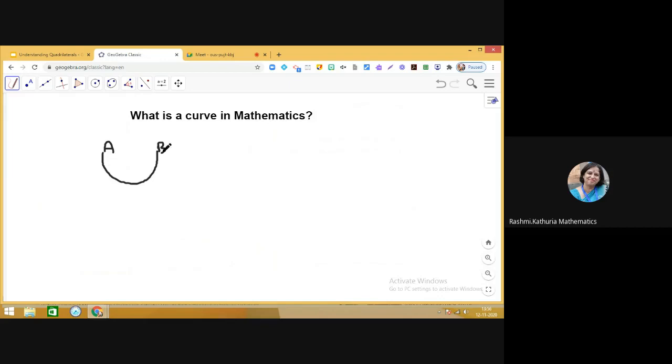So this A-B is a curve, and we call it an open curve. Interestingly, you will notice that in mathematics, if you take the line segments, I have taken this like this. So this is also a curve, and this is an open curve.